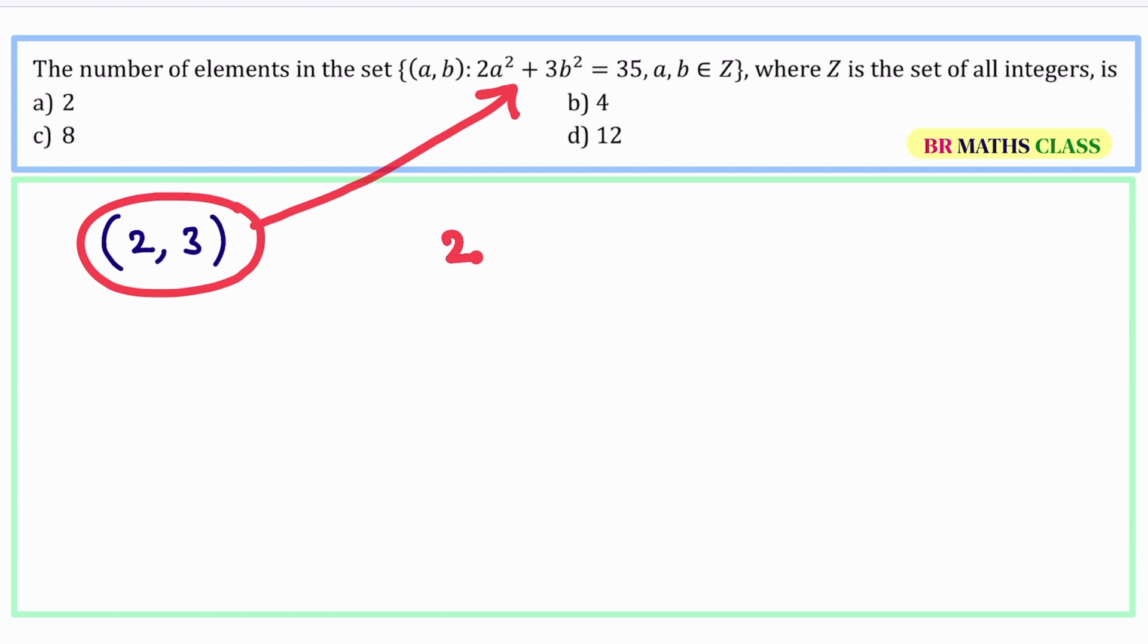In this what you'll get, 2 into 2 squared is 4 plus 3 into 3 squared is 9. 8 plus 3 times 9 is 27. 8 plus 27 is 35. So, the order pair satisfies this equation. Here 2 and 3 are integers. You need to observe one thing here,